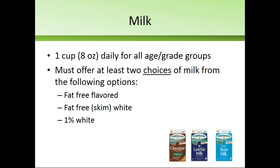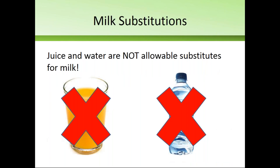Now we're going to go into each of the food components. Starting with milk — milk is required to be offered every single day. At lunch, you must offer one cup or eight ounces for all age-grade groups. You also must offer two choices or two types of milk from the following options: fat-free flavored milk, fat-free or skim white milk, or one percent white milk. So you must offer two choices from those three types of milk.